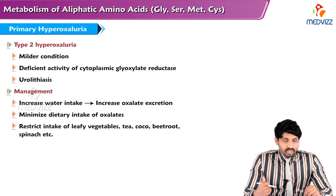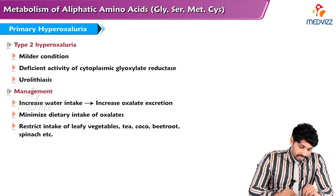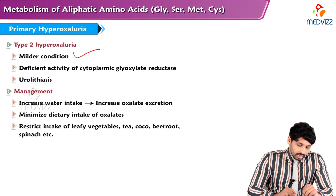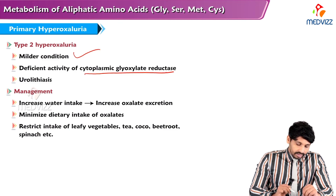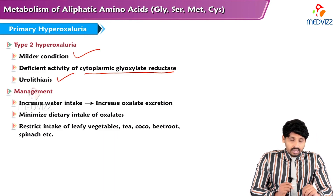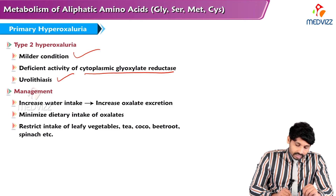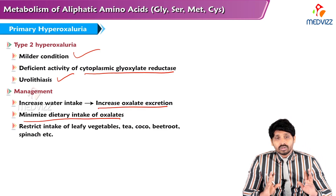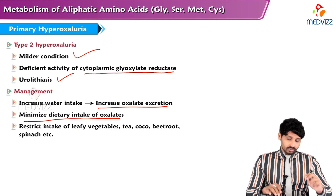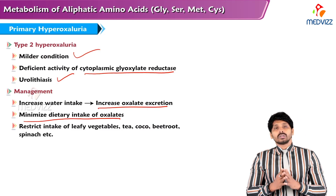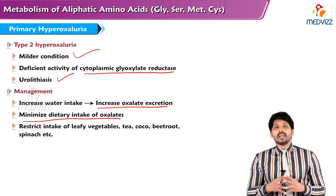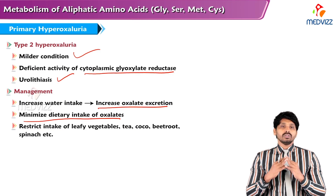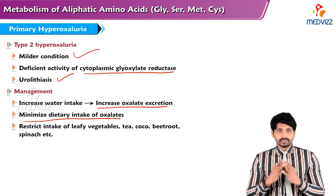Type 2 hyperoxaluria is a milder condition caused by deficient activity of cytoplasmic glyoxalate reductase, resulting in urolithiasis. Management includes increased water intake to increase oxalate excretion and minimizing dietary oxalate intake — reducing consumption of leafy vegetables, tea, cocoa, beetroot, and spinach. That covers glycine metabolism, its biologically important products, and related disorders. Thanks for watching.